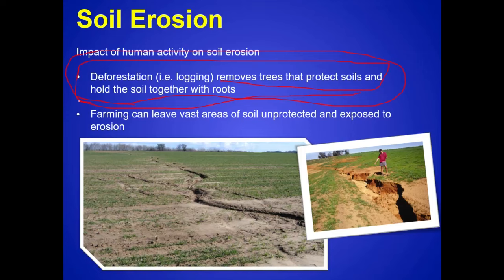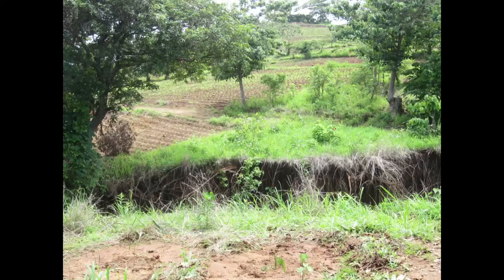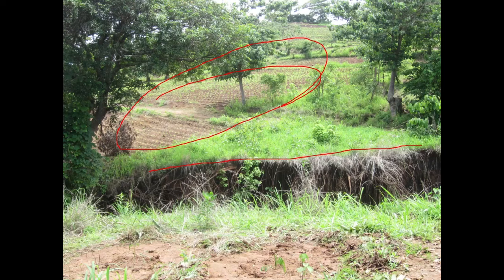Farming also contributes — when we farm, we remove the native vegetation and trees, and that leaves vast areas of soil unprotected and exposed to erosion. These pictures from Malawi show farming on the hillside where removed native vegetation is contributing to soil erosion. The banks of the river keep widening and cutting into the soils because there are no roots to hold it together.